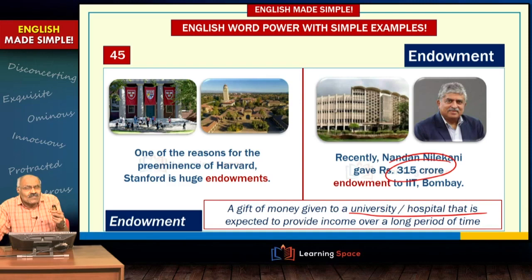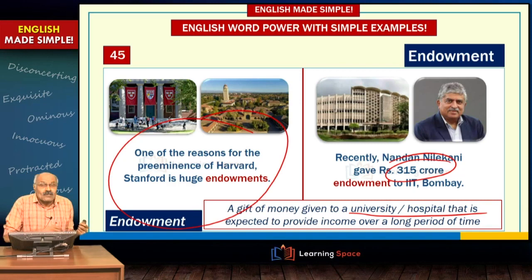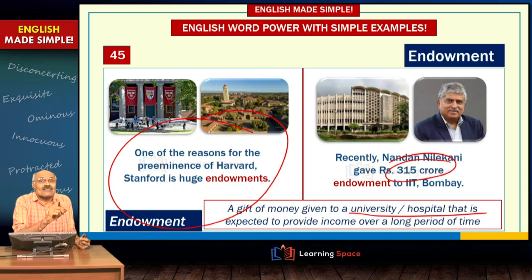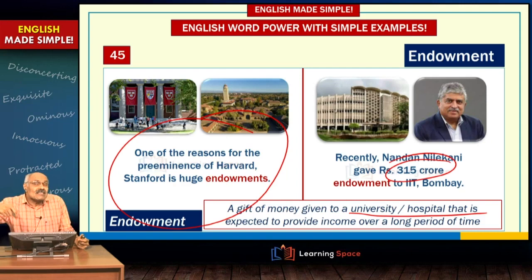Stanford and Harvard have billions of dollars of endowments — that's why they have pre-eminence in the world and are in the topmost rankings. So one meaning of endowment is a huge sum of money given to a hospital or educational institution so that the income generated is used over a long period of time.